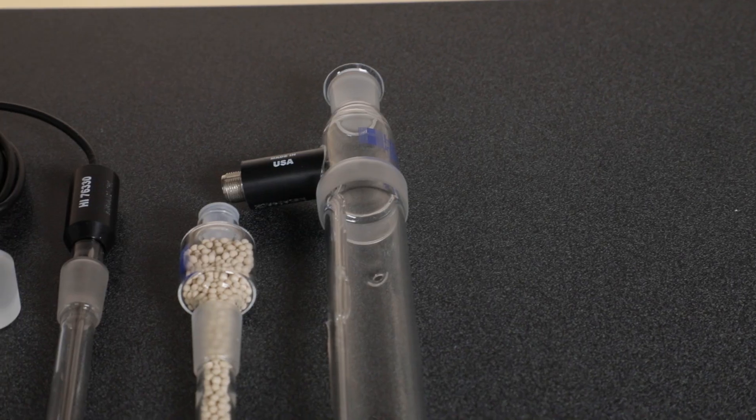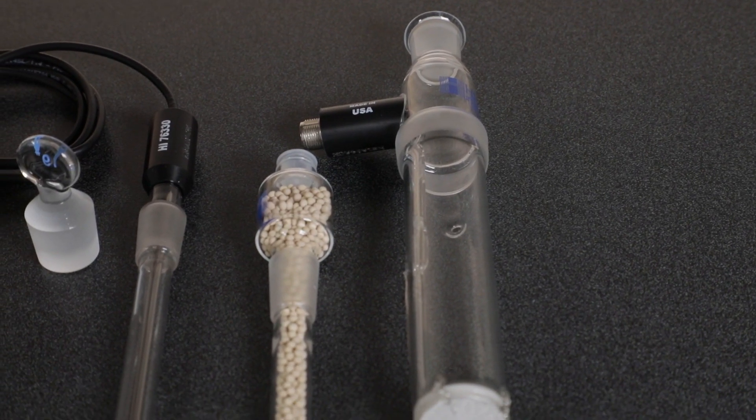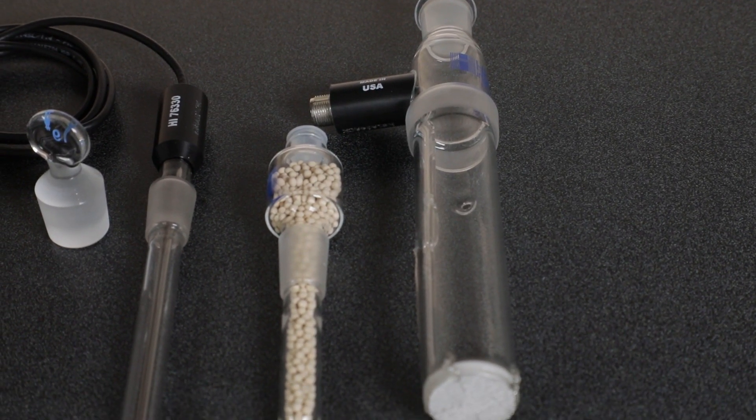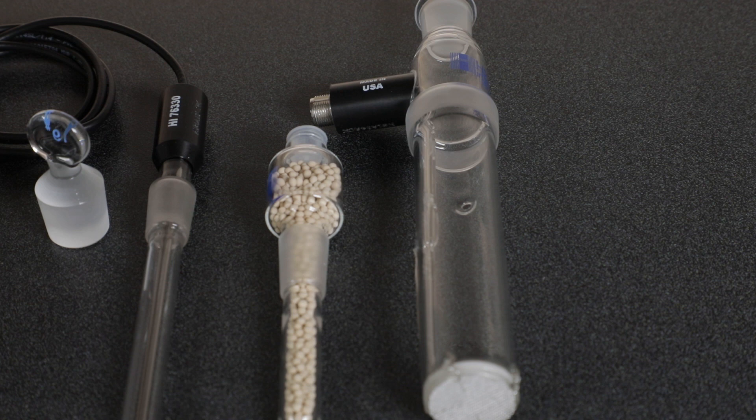Next, we'll assemble the beaker assembly and place the remaining ground glass components. For each ground glass component, make sure to apply a thin layer of silicone vacuum grease to each joint before inserting.